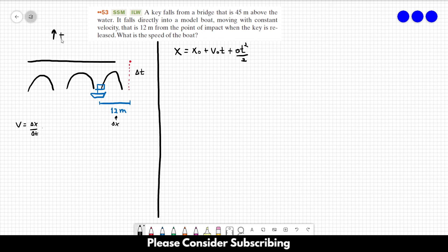upwards is positive and downwards is negative. Let's say that at this point it is 45 meters—this is x₀—and the water is the final position, which is zero meters. Just don't make...